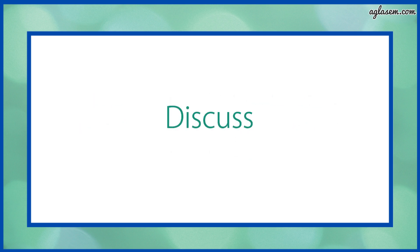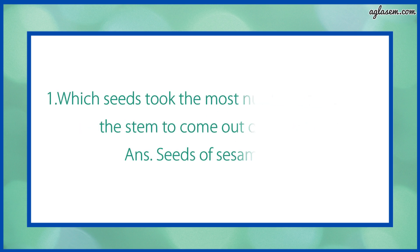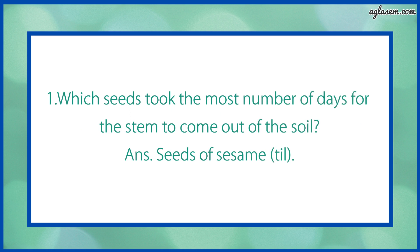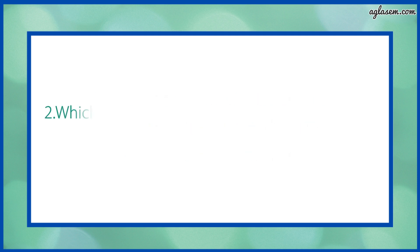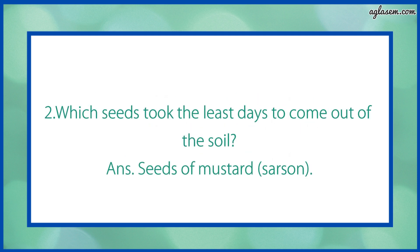Now, discuss. Question number 1 says: which seeds took the most number of days for the stem to come out of the soil? Answer: seeds of sesum, i.e. till. Second question says: which seeds took the least days to come out of the soil? Answer: seeds of mustard, i.e. sarsu.